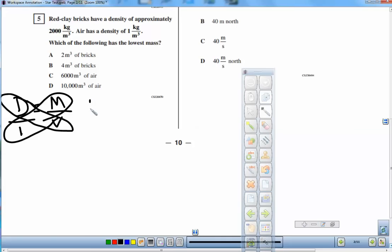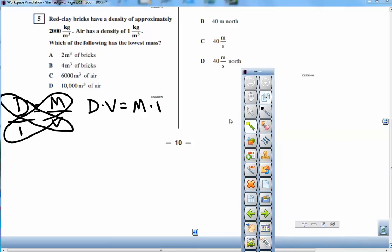So what we could do is rewrite this as density times volume actually equals mass times 1, and the times 1 doesn't really matter. So we've kind of got ourselves now an equation that we can use. It's an equation for mass. So let's use it.